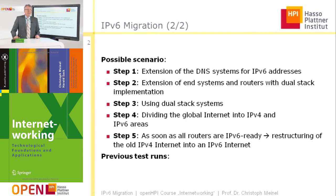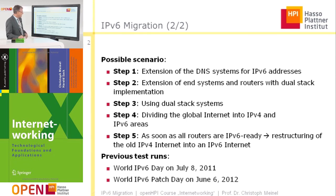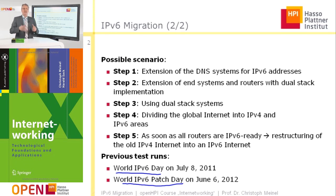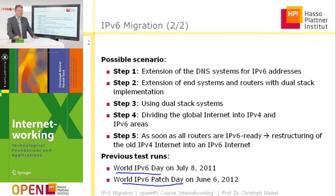Does this concept really work? For this, different tests were run, not only inside individual networks but also worldwide. There are two worldwide IPv6 days: the first was in July 2011, and another called World IPv6 Launch Day was on June 6th, 2012. Here worldwide, content providers and network providers tested whether the IPv6 protocol is ready for practical use and whether it's possible to use it without a major blackout of the Internet.